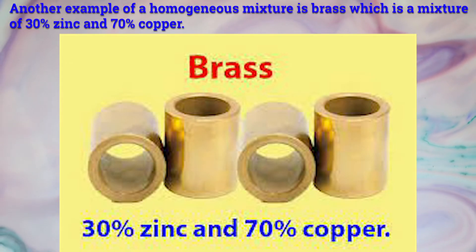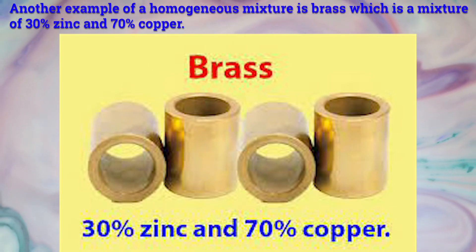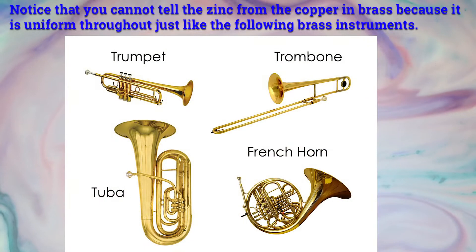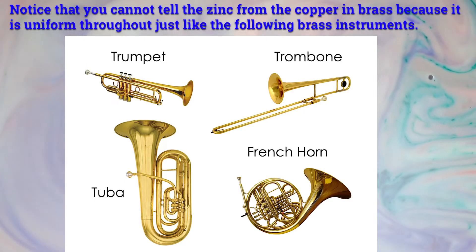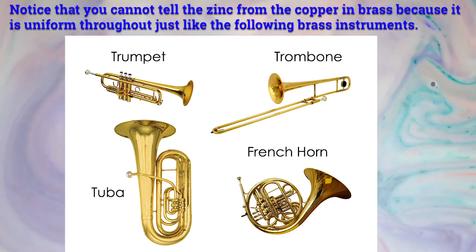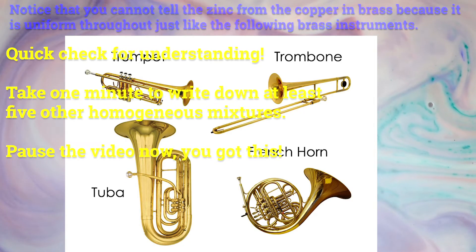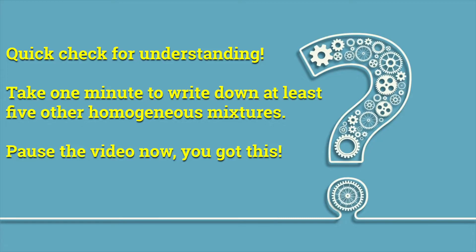Another example of a homogeneous mixture is brass, which is a mixture of 30% zinc and 70% copper. Notice that you cannot tell the zinc from the copper in brass because it is uniform throughout, just like the following brass instruments. Quick check for understanding: take one minute to write down at least five other homogeneous mixtures. Pause the video now — you got this.